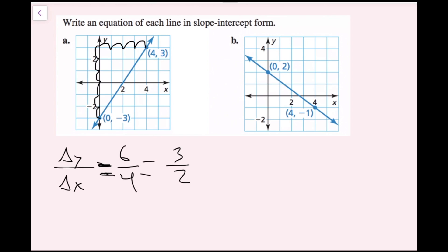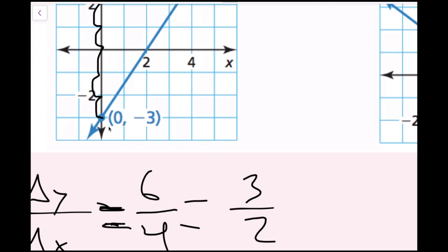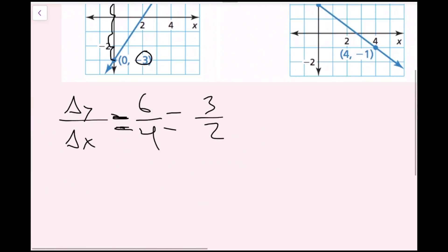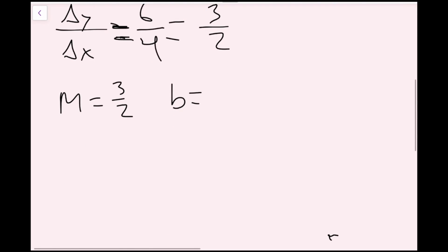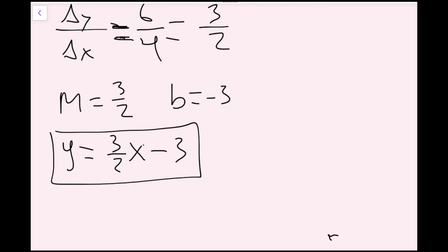It's always good to leave slope as an improper fraction — it's more helpful that way. Now I've found my slope. Zooming in on the graph, the y-intercept is the value of y when x equals 0, which is right at the y-axis. The corresponding y value is negative 3. So m equals 3 over 2 and b equals negative 3. Writing this in slope-intercept form: y equals 3 halves x minus 3.